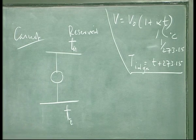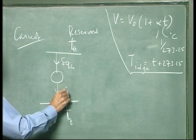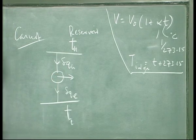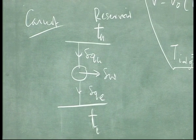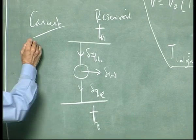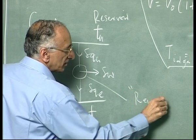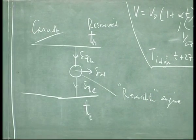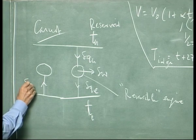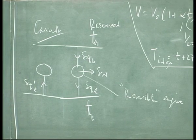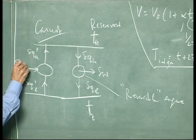What Carnot said was that he is going to take heat from the higher temperature, reject heat to a body at a lower temperature, and perform a certain amount of work delta W. He said this engine could in principle be run in reverse — he called this a reversible engine. He simply assumed that an engine could be run backwards. So he takes another engine, also a reversible engine, and can take a certain amount of heat delta Q_L prime from the lower temperature, reject heat delta Q_H prime to the higher temperature, and put in work delta W prime.